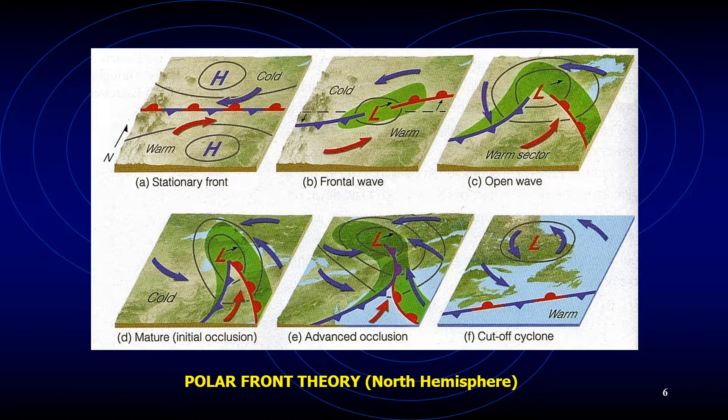As the open wave moves eastward, its central pressure continues to decrease and the winds blow more vigorously as it develops into a mature cyclone. The faster-moving cold front constantly inches closer to the warm front, squeezing the warm sector into a smaller area, as seen in part D. Eventually, the cold front overtakes the warm front and the system becomes an occluded front. At this point, the storm is usually most intense with clouds and precipitation covering a large area.